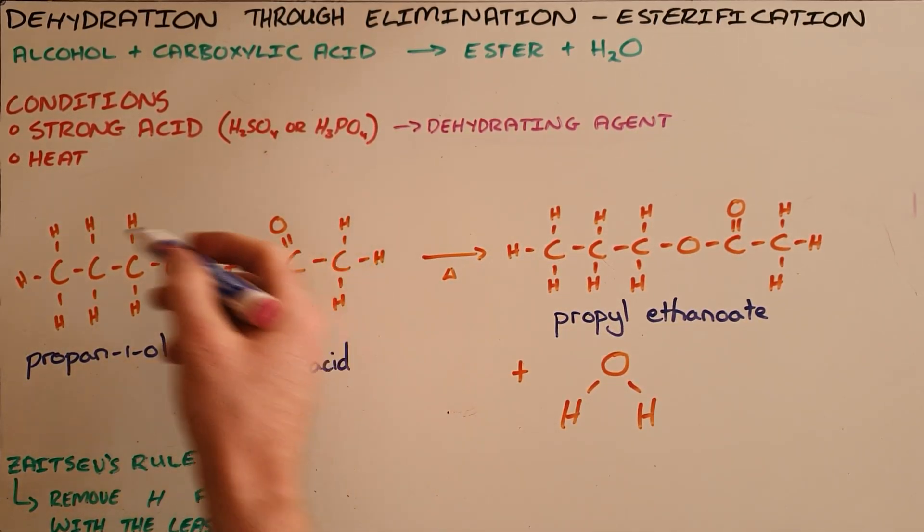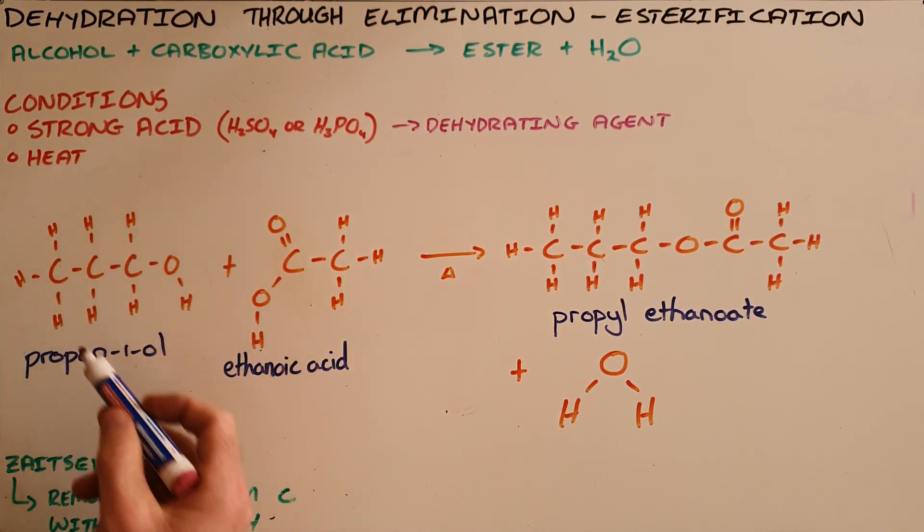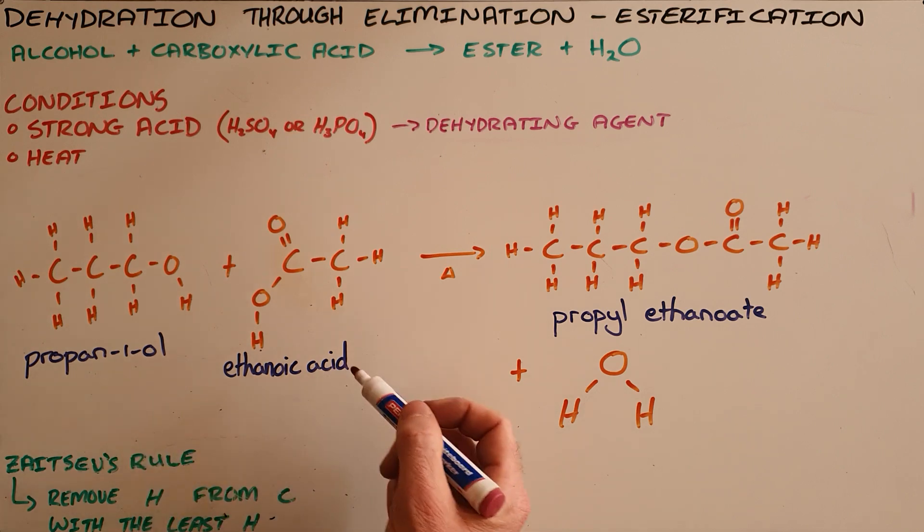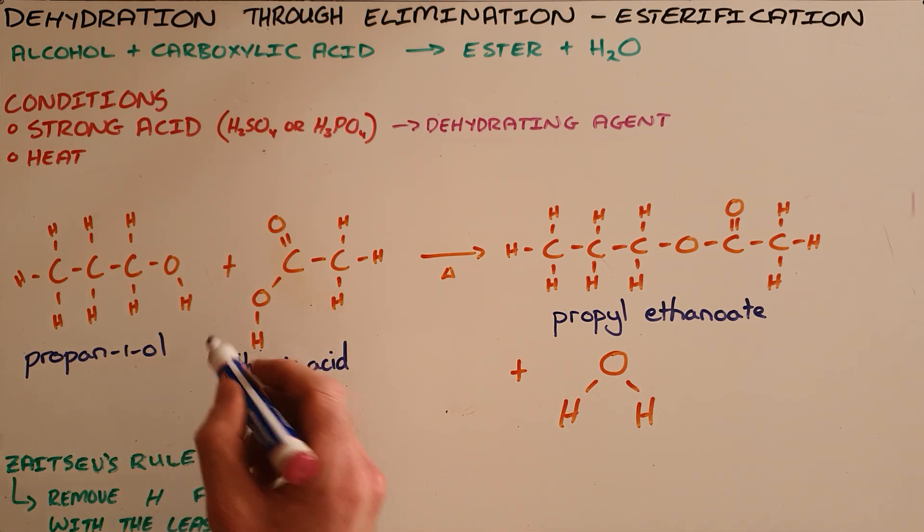So in an esterification reaction we have an alcohol. In this example we have propan-1-ol that reacts with a carboxylic acid. Here we have ethanoic acid.